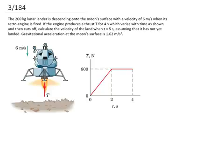The 200 kg lunar lander is descending onto the moon's surface with a velocity of 6 m/s when its retro engine is fired. If the engine produces a thrust T for 4 seconds, which varies with time as shown and then cuts off, calculate the velocity of the lander when t equals 5 seconds, assuming that it has not yet landed. Gravitational acceleration at the moon's surface is 1.62 m/s².